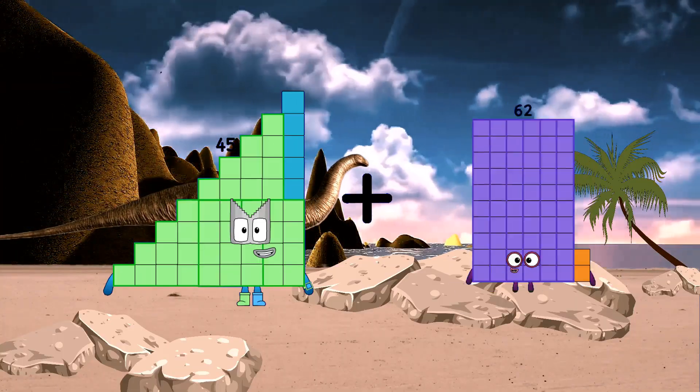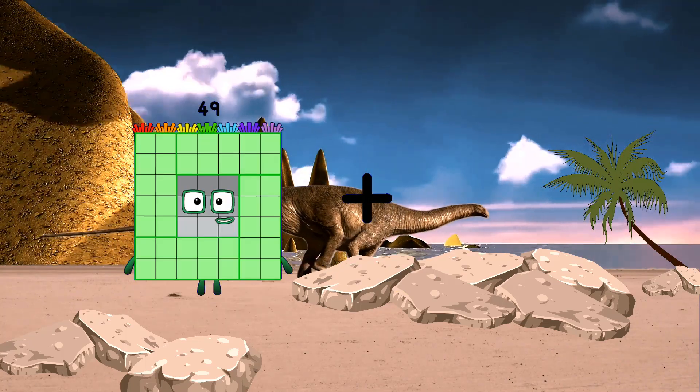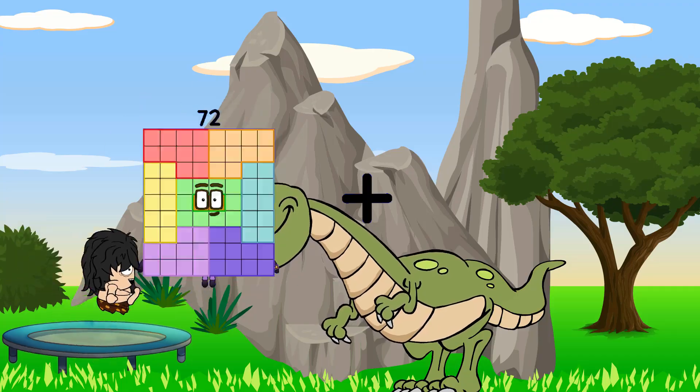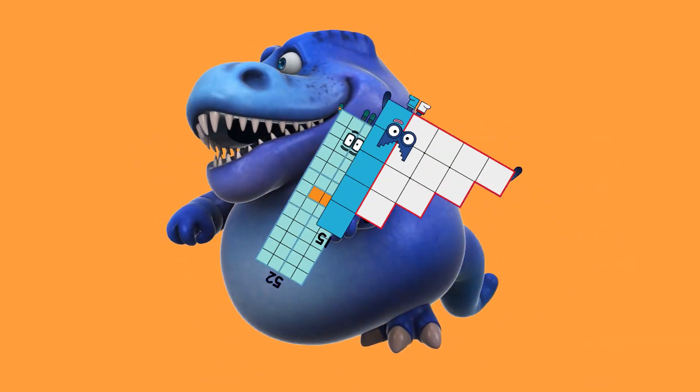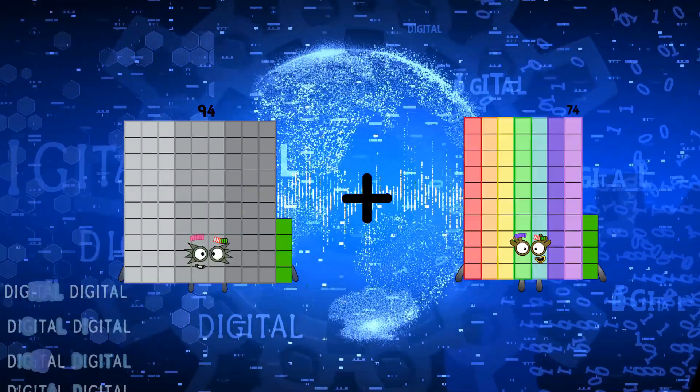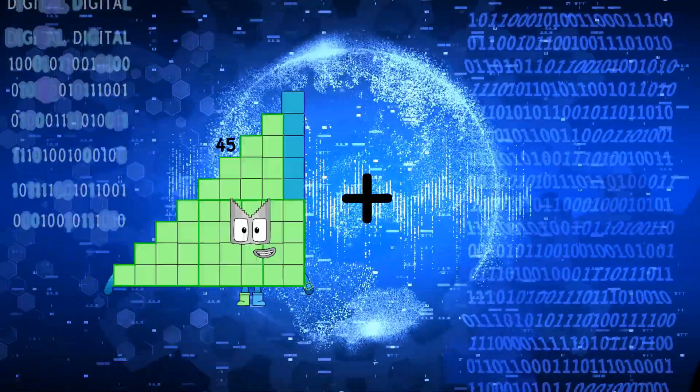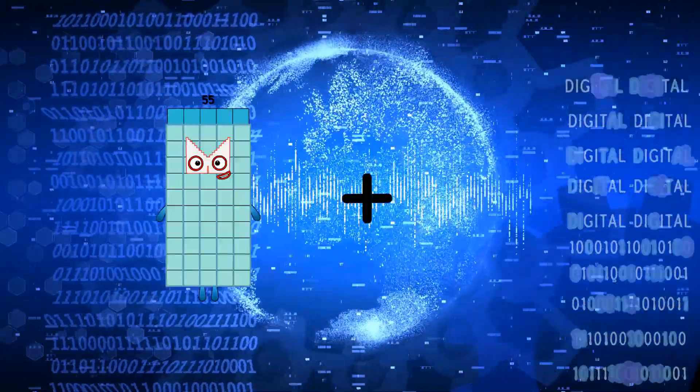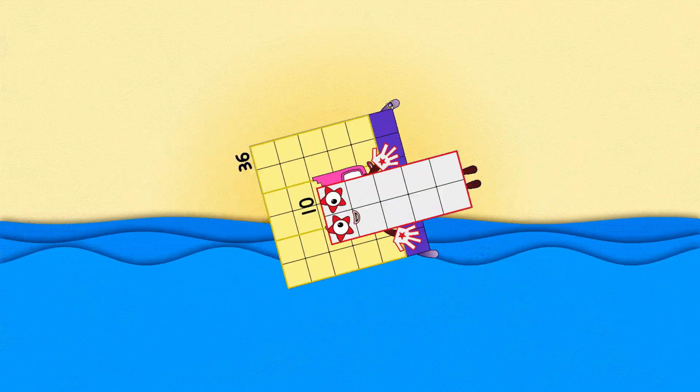45 plus 35 equals 80. 49 plus 6 equals 55. 52 plus 15 equals 67. 94 plus 17 equals 111. 24 plus 46 equals 70. 36 plus 10 equals 46.